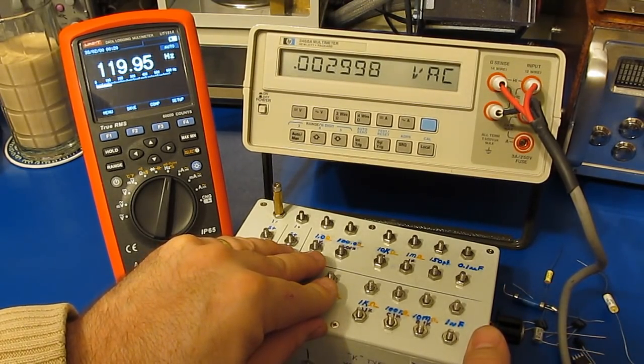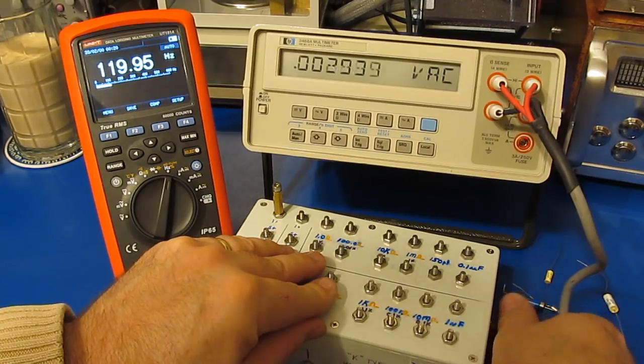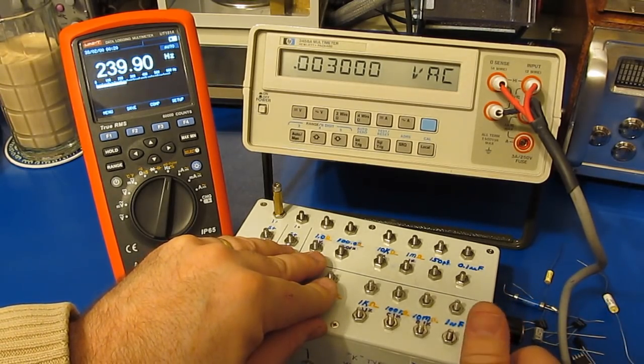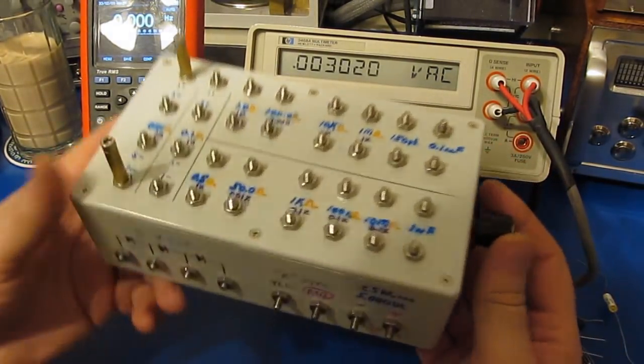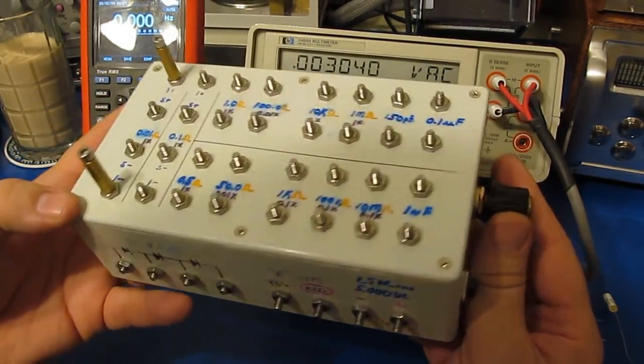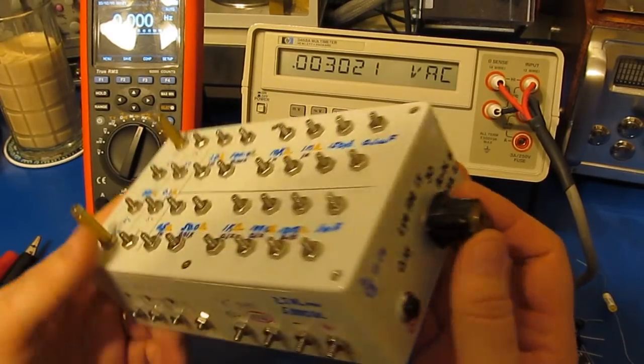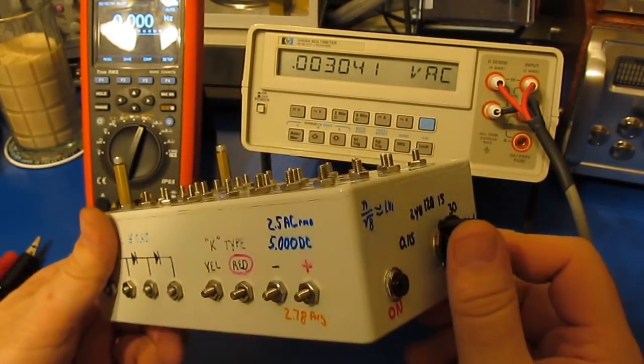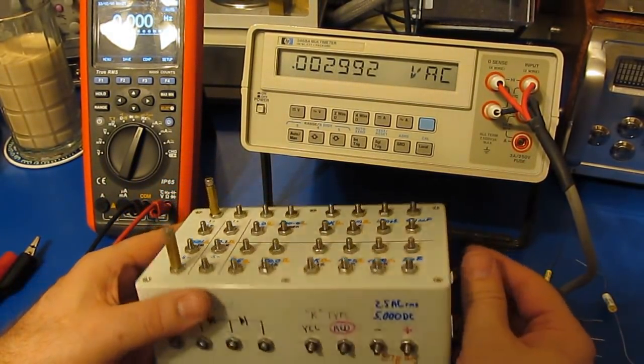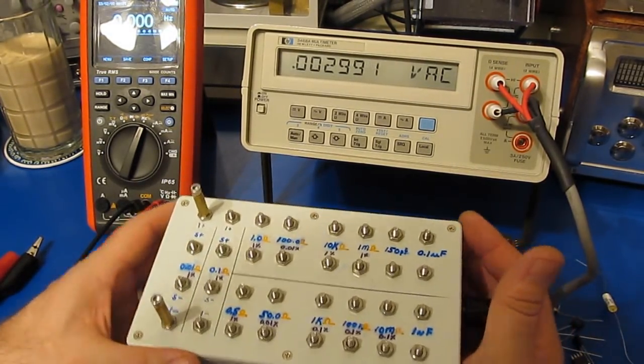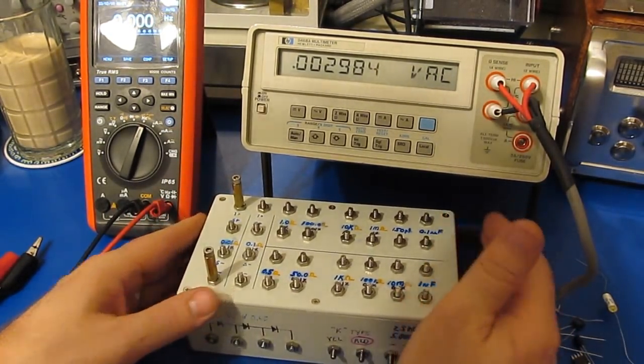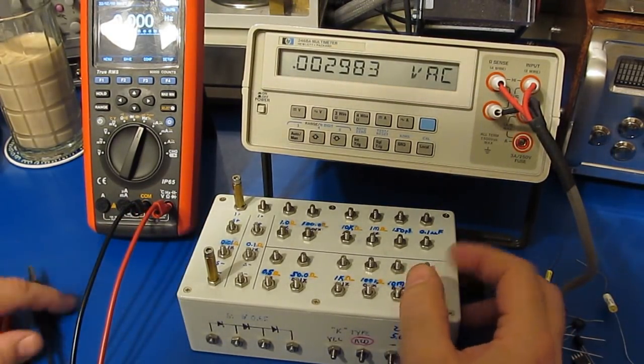So again this box can't be used to align a meter, it's not nearly accurate enough for that. But it does provide me a fast way to functional test the meters as I'm doing transient testing on them. Well for those of you who had questions about this box and what was inside, I hope I helped answer those questions for you. Until the next meter, later.